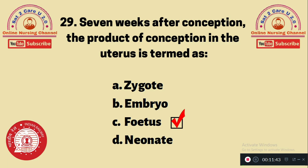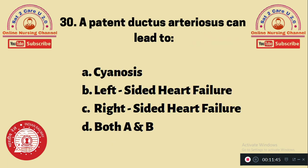Question 30: A patent ductus arteriosus can lead to — A. Cyanosis, B. Left-sided heart failure, C. Right-sided heart failure, D. Both A and B. Patent ductus arteriosus can lead to option D — both cyanosis and left-sided heart failure. This occurs because of a left-to-right shunt.